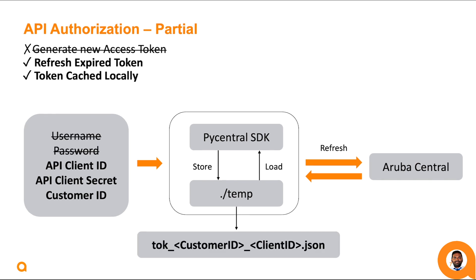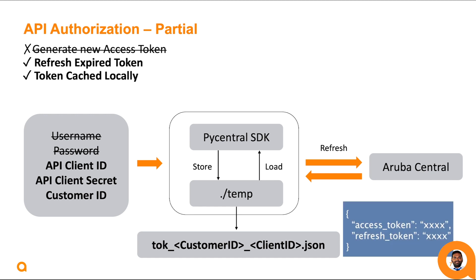In case you don't want to generate the access token from the script and don't want to share your username and password to an external application, you can just share the client ID, client secret, and customer ID. This information will help in refreshing the expired access token. Since we don't provide enough information to generate a new access token in this case, we need to copy and paste it from the Aruba Central user interface for the first time, after which the script can refresh the token when it expires. The token file is named in the format .tok__customerid__clientid.json in the temp directory. The token is cached locally and we have the ability to refresh it when expired.